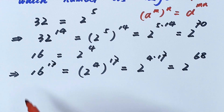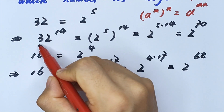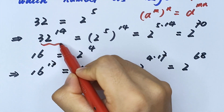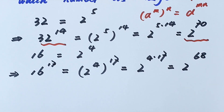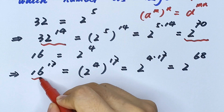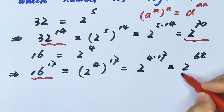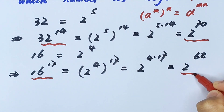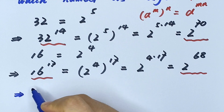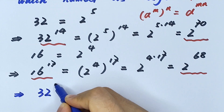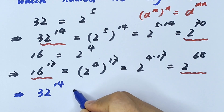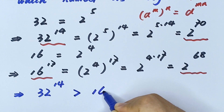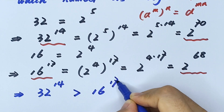Now we have: 32 to the power of 14 equals 2 to the power of 70, and 16 to the power of 17 equals 2 to the power of 68. Since 2 to the power of 70 is greater than 2 to the power of 68, we conclude that 32 to the power of 14 is greater than 16 to the power of 17.